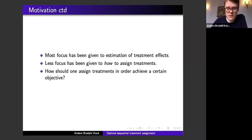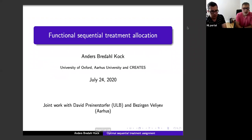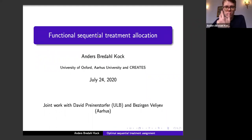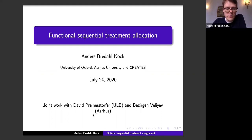What I'm going to talk about today is functional sequential treatment allocation — treatment allocation where the individuals to be treated first arrive sequentially, and second, you're interested in a distributional characteristic other than the mean. This is joint work with David Preinerstorfer in Brussels and a visiting colleague in Aarhus.